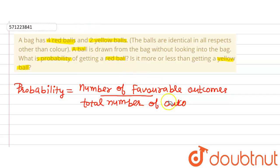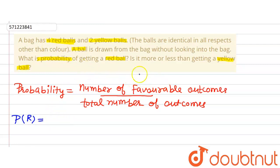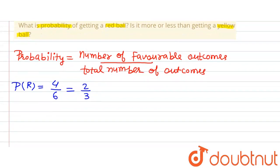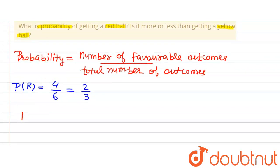In this question, there are four red and two yellow bowls, which means there are total six bowls. So the total number of outcomes will be six. The probability of getting a red bowl — P(R) — is equal to the number of red bowls, that is 4, divided by total number of bowls, which is 4 plus 2 equals 6. On solving further we get 2 divided by 3. So the probability of getting a red bowl is 2 by 3.